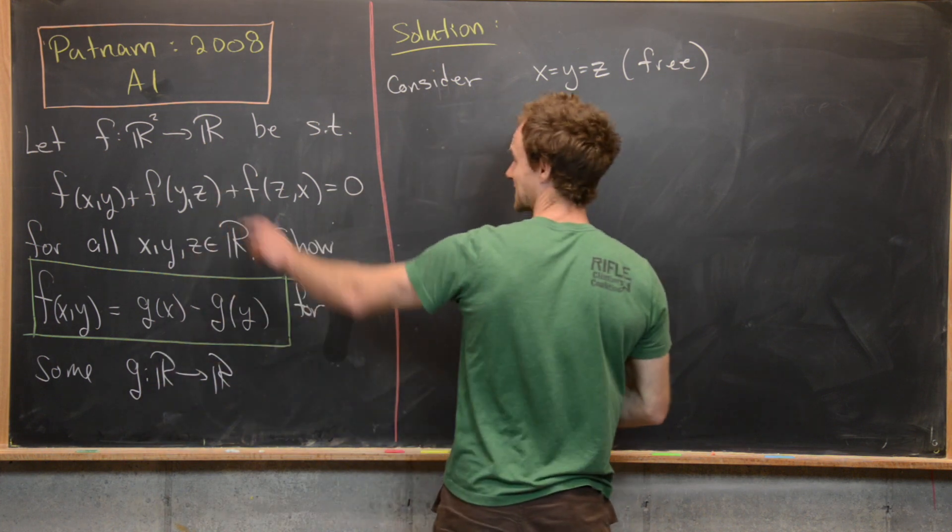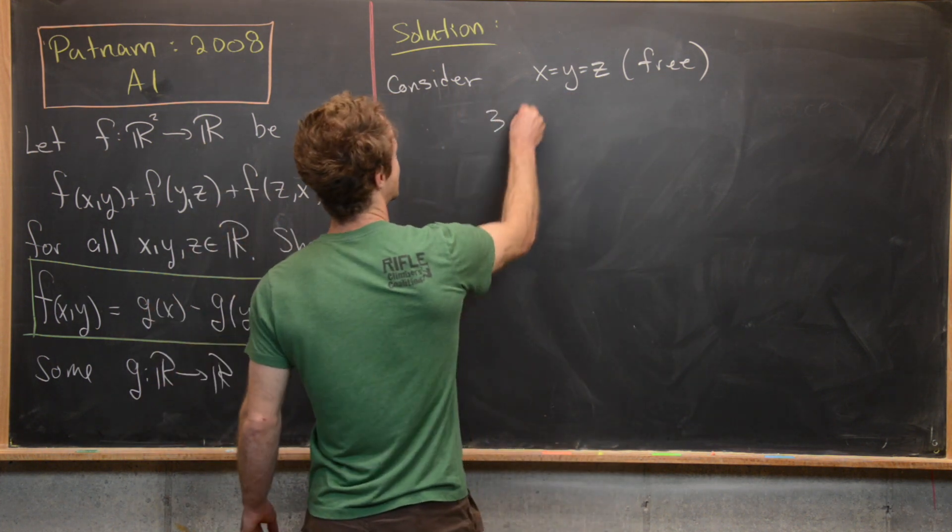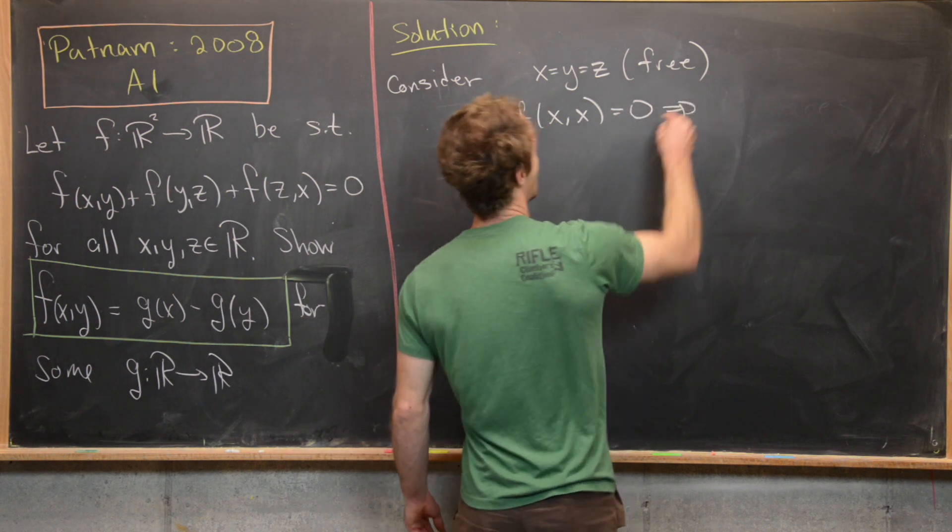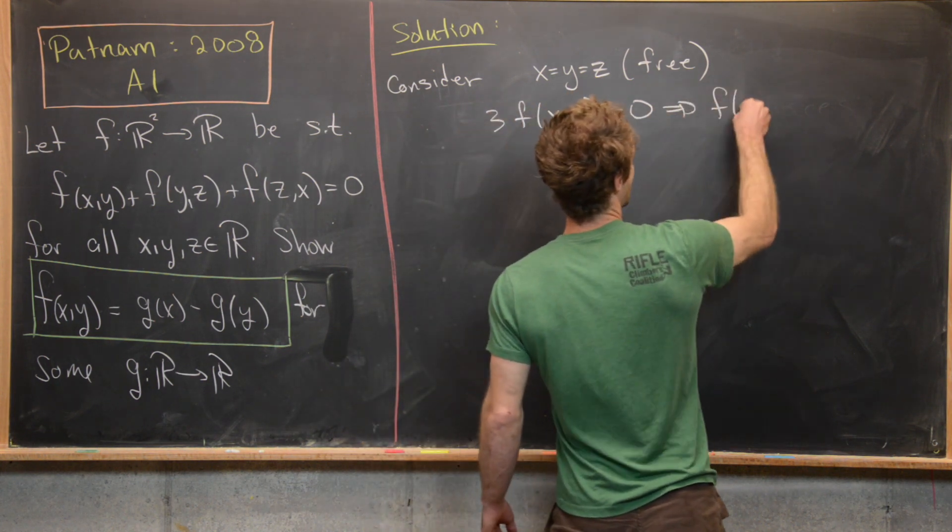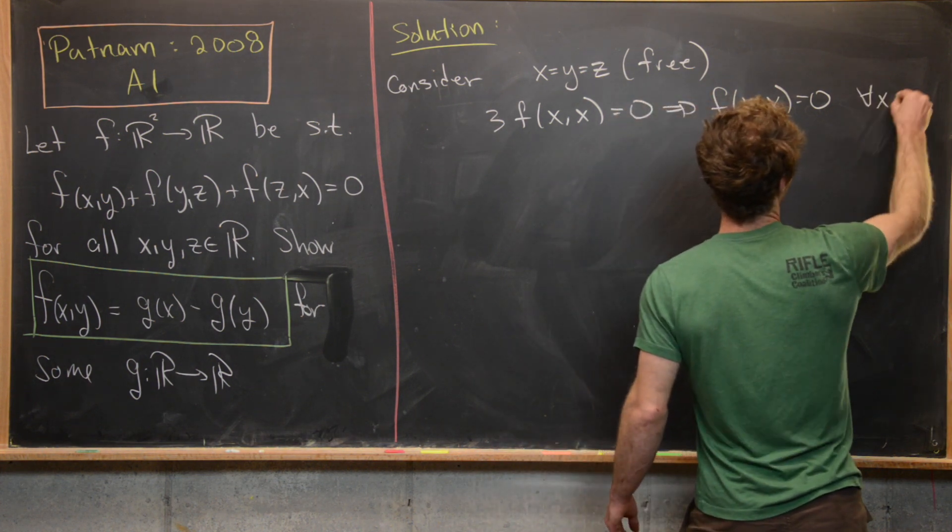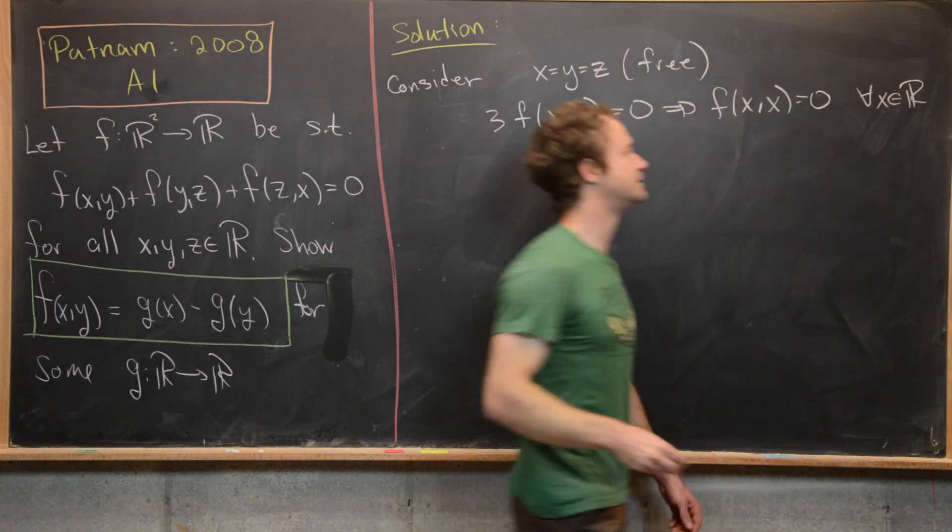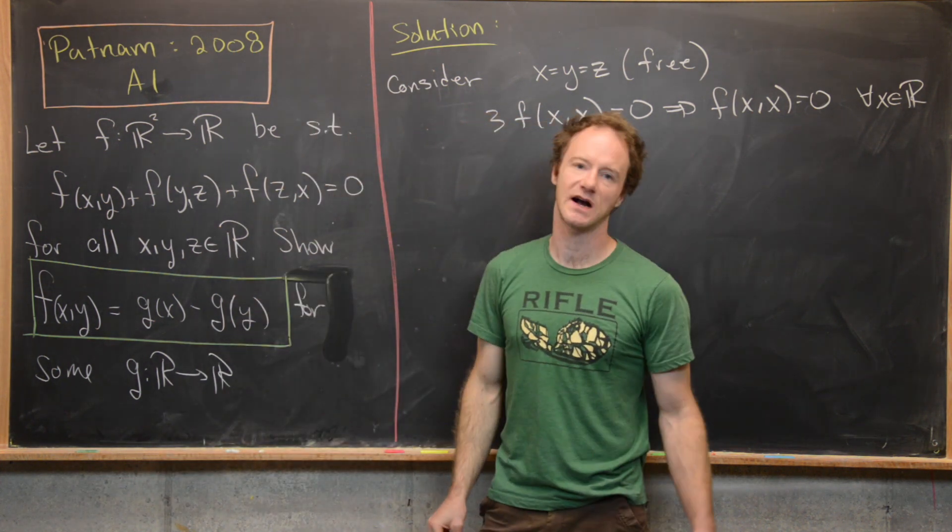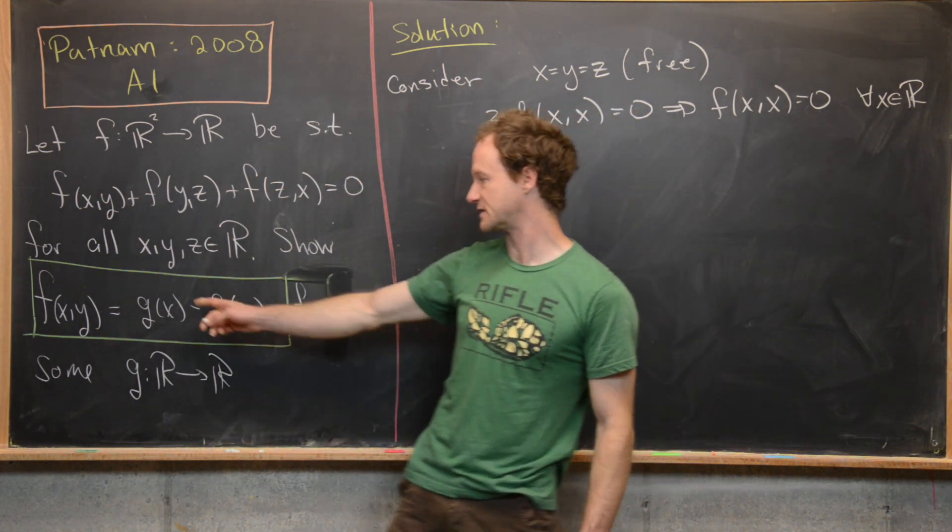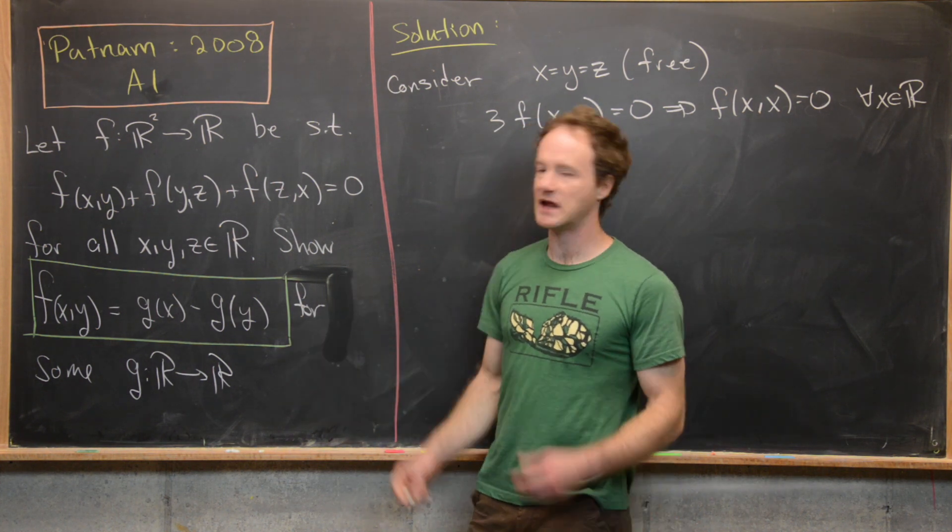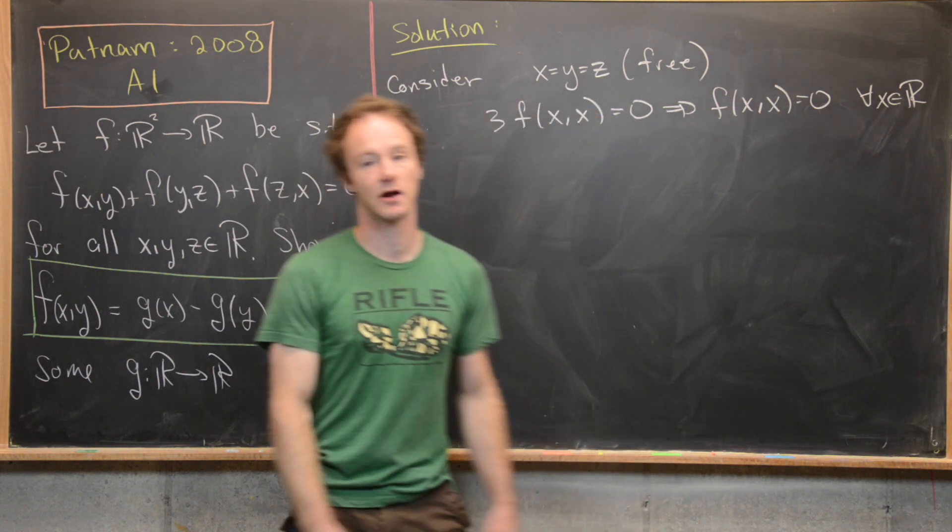So notice in that setup, we're going to get 3f(x,x) = 0. In other words, we get f(x,x) = 0. And that's got to be true for all x in real numbers. We'll notice that if we have this kind of setup in this green box, then this is definitely satisfied because we have g(x) - g(x). And so that gives us a good hint that maybe this is something good to look at along the way.